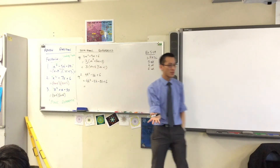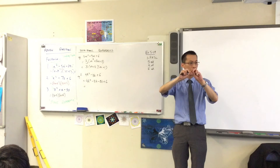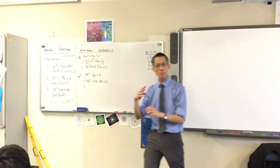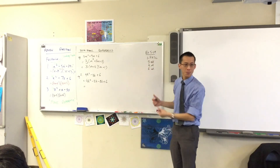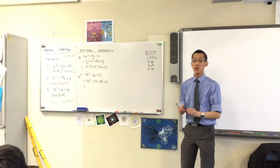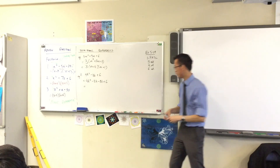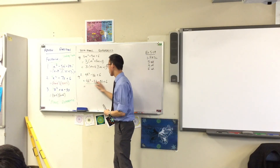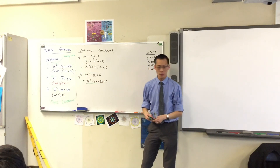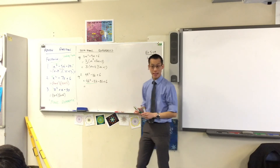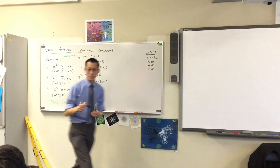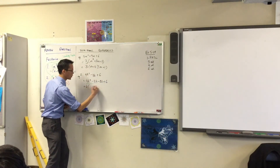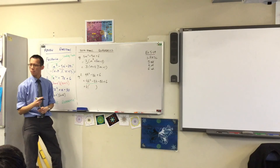I gave you lots of questions where you had four terms in a row. Your main strategy was to pair them up and ask: is there a common factor between these two? In this case there is — it's going to be k.